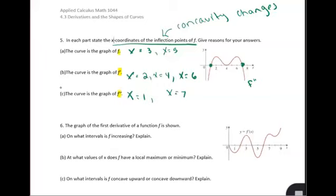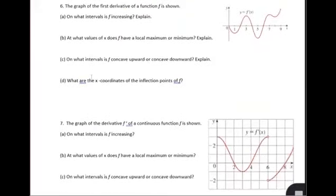So three different considerations here based on whether we're looking at the original graph, the derivative graph, or the second derivative graph. In part 6, we have the graph of the first derivative of a function given — this graph right here is the graph of the first derivative, it's even labeled for us. I don't know what the original equation looked like, but I do know that we're given the graph of the first derivative. Let's see what we can decipher from that.